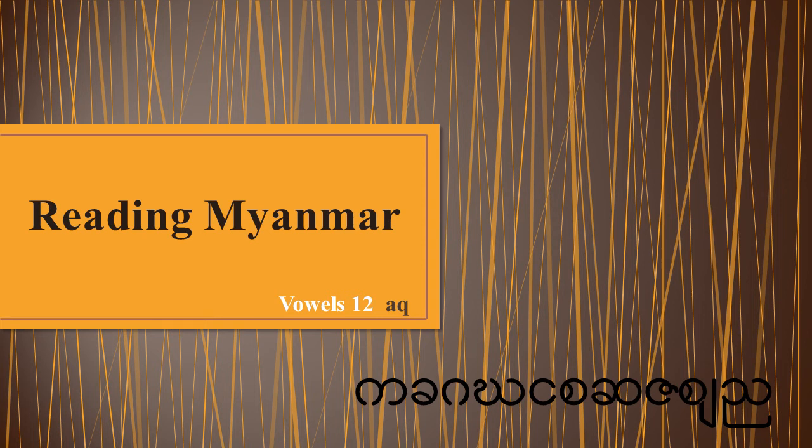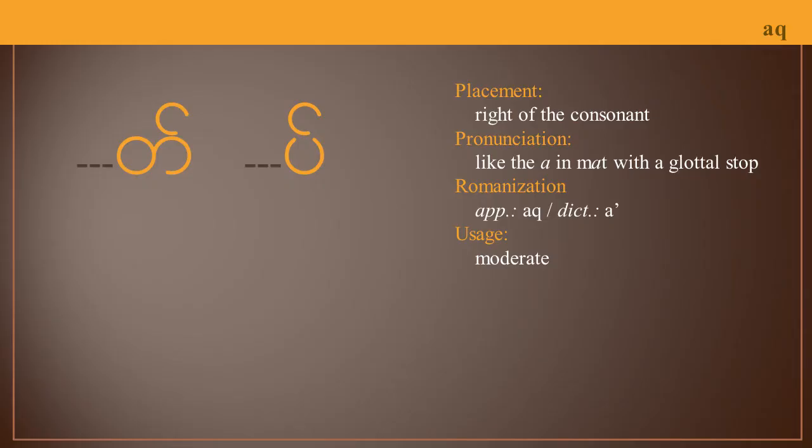Reading Myanmar Vowels Lesson 12. In this lesson you're going to get two for one because both of these symbols have the same vowel sound. Both of them appear to the right of the consonant.